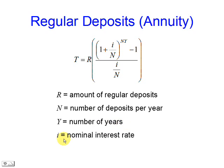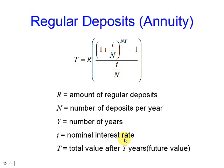I is the nominal interest rate. And T is the total value after a certain number of years.